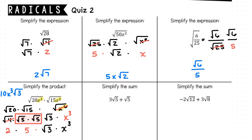For the fifth item, we're asked to simplify the sum: 3 times the square root of 5, plus the square root of 5. Since I'm talking about the square root of 5 in both terms, I can combine these as like terms. I have 3 square roots of 5 and 1 square root of 5, which make a total of 4 square roots of 5.